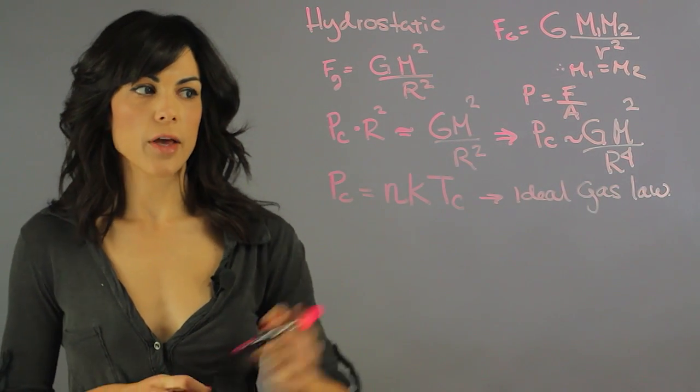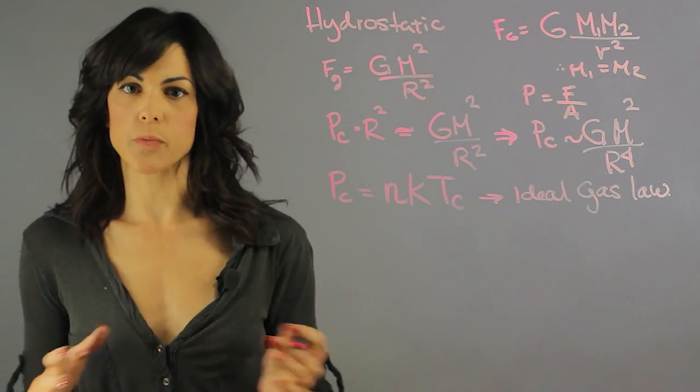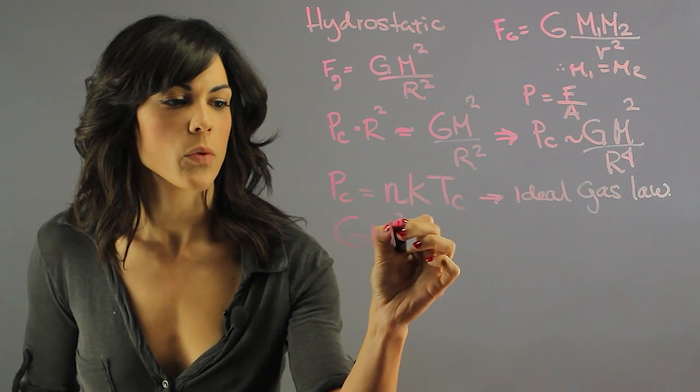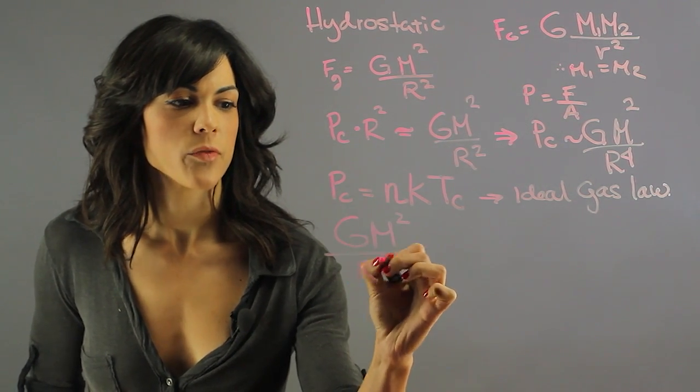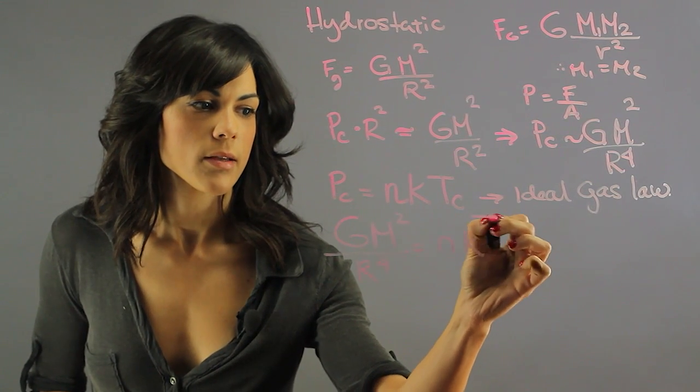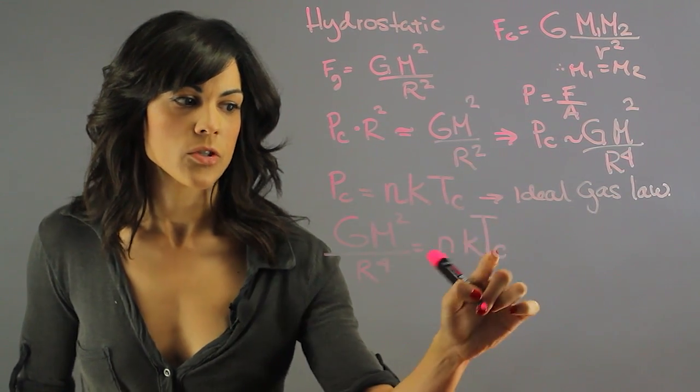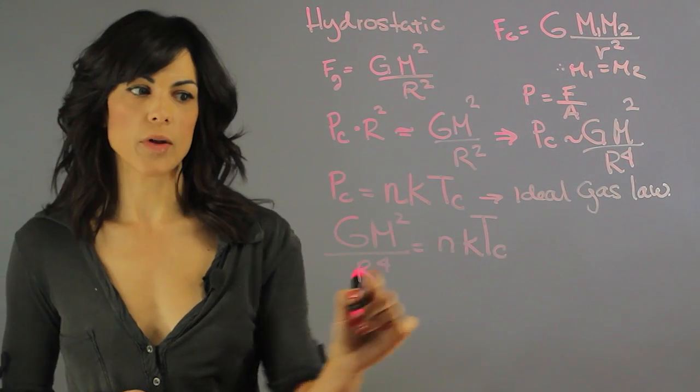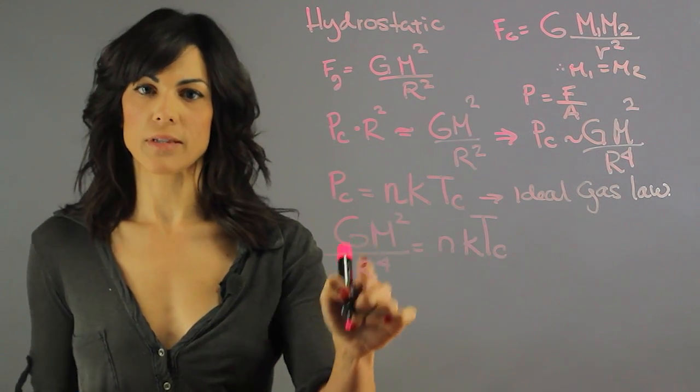So if we have this equal to that, let's put it together. So we have G m square r to the fourth equal to NKTC. So now we already have the temperature of the core involved. So now it's just a matter of figuring out what these things are.